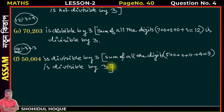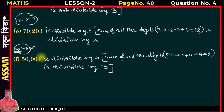These numbers were solved using the divisibility test of 3. It is important to understand the divisibility test of 3 clearly. If we know this test, solving these numbers becomes very easy and quick. For example, 50,004 — if we try to divide directly it takes time, but using the divisibility test we can quickly confirm whether a number is divisible by 3 or not.